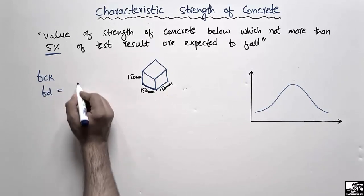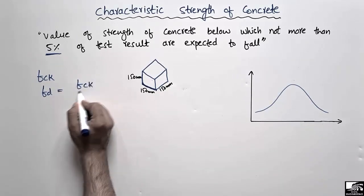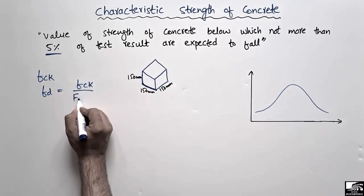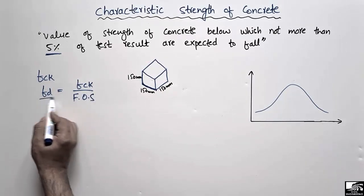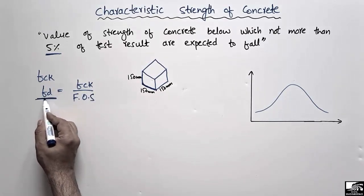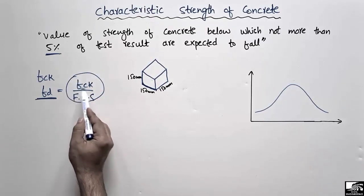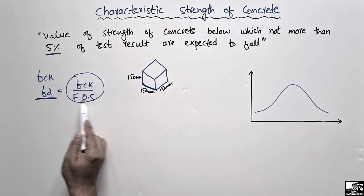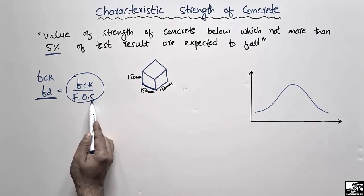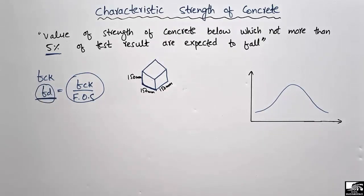The design strength of the concrete is equal to the characteristic strength of the concrete divided by the factor of safety. That is why it is very important to know the characteristic strength of the concrete — we divide it by the factor of safety to determine the design strength.